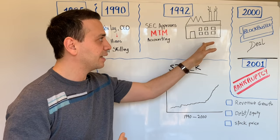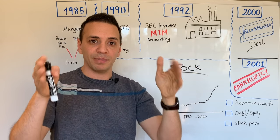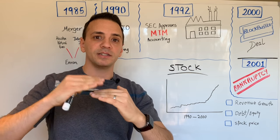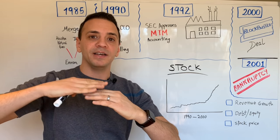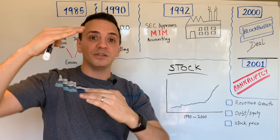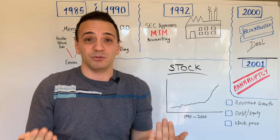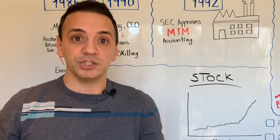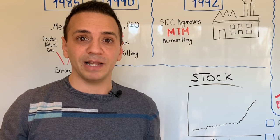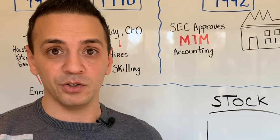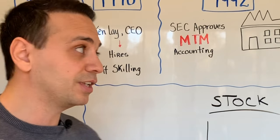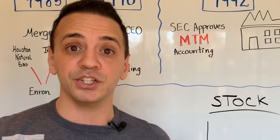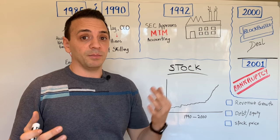Specifically, when Enron built a power plant, they could look at the plant's value at construction, then look at its future expected revenue, and adjust the value of the plant based on the cash flows it was expected to generate — allowing them to capture projected future revenue as revenue today. This is remarkable, but believe it or not, this technique got approved by the SEC in 1992.